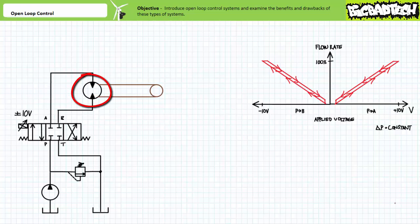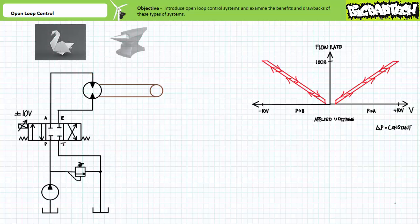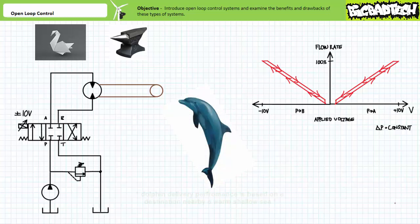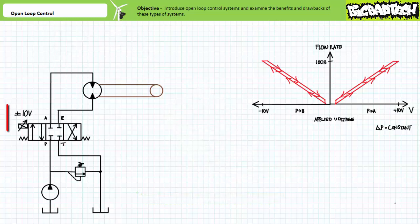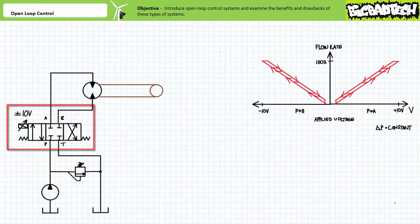Consider a bi-directional hydraulic motor being used to drive a conveyor belt at a factory that produces two items: rice paper origami swans and anvils. Despite the bi-directional nature of the motor, it's customarily run in one direction only, sending freshly folded swans and cast anvils to another part of the factory where trained dolphins package the products for delivery. The hydraulic system makes use of an electrically actuated, continuously variable proportional valve, where spool position influences both flow rate and direction.